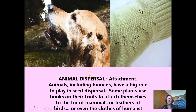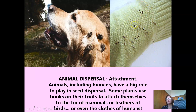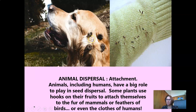Animal attachment dispersal: seeds attach themselves to animals — and humans too. Some plants use hooks on their surface to attach themselves to the fur of mammals, the feathers of birds, or even the clothes of humans. When you're walking outside and you get blackjacks on you, especially on farmlands, just know that when they fall off, each little seed is going to grow into a new blackjack plant. These seeds have little hooks that attach themselves — it can be quite hard to pull them out of your dog's fur.